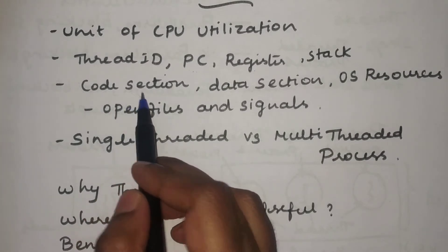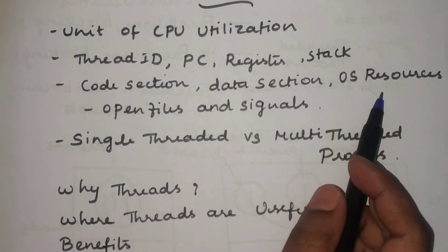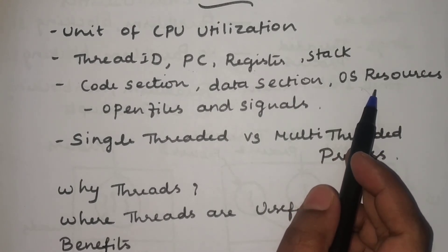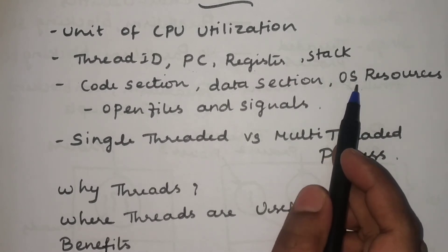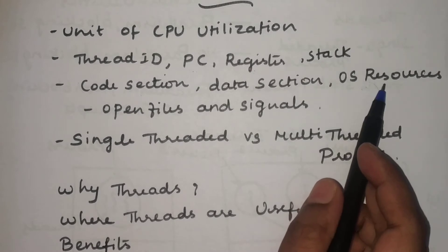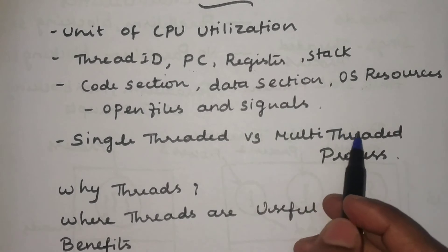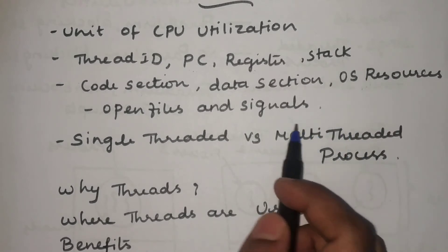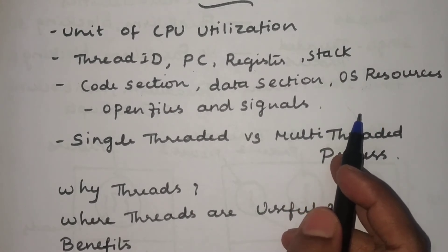Even for threads we have all these kinds of storage information. The next components are the code section, data section, and operating system resources. Whenever a process wants to execute, all the resources are initially allocated to the process by the operating system. Similarly, threads will also take over control of all those resources to perform their own operations. For that, they need OS resources like open files, signals, and accounting information — everything stored for each and every thread.